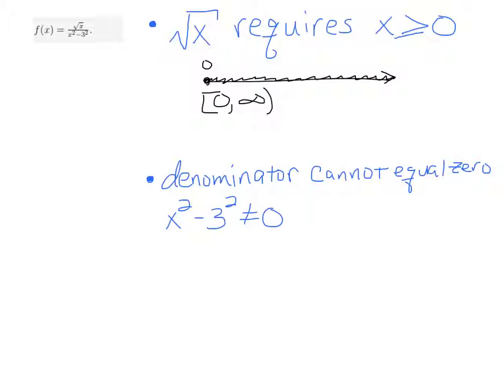Now we have to consider the denominator. That means x² - 3 cannot equal 0, so let's determine where it equals 0. We have a difference of squares here. If we factor this difference of squares, we have (x - 3)(x + 3). We don't want these to equal 0, so x ≠ 3 and x ≠ -3.